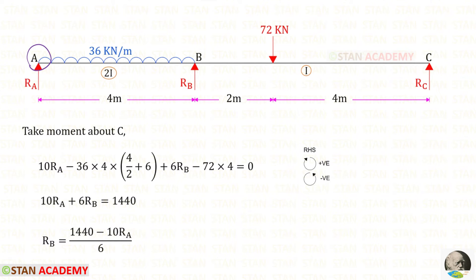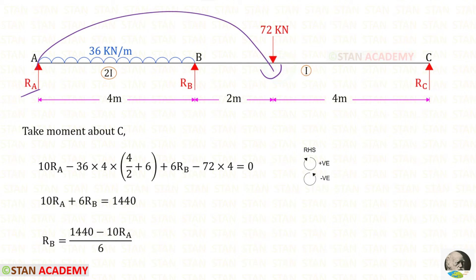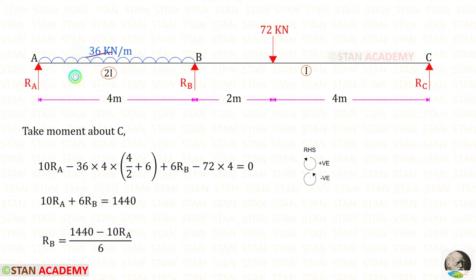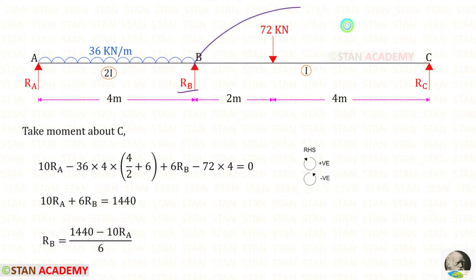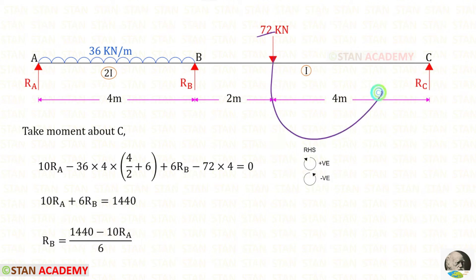From point A, let us take moments about C following the right-hand side rule, where clockwise is positive and anticlockwise is negative. RA acts clockwise, so its contribution is 10·RA. The UDL acts anticlockwise; its moment arm involves distance 4 divided by 2, plus the remaining 6. RB acts clockwise, giving 6·RB. The 72 kN point load acts anticlockwise at a distance of 4.